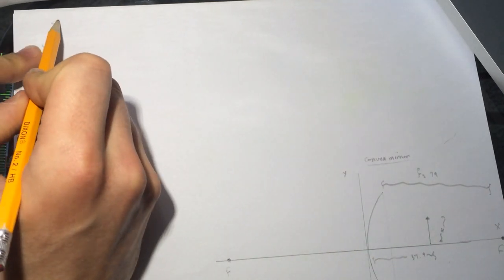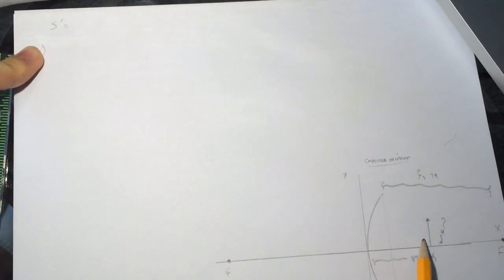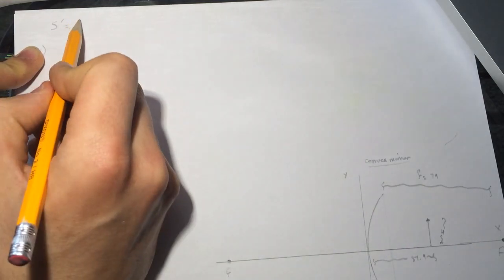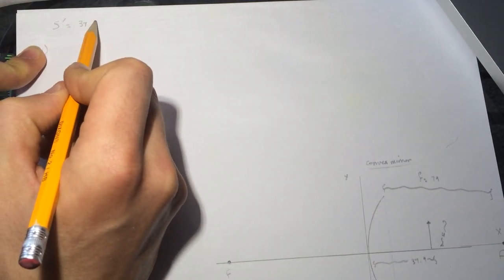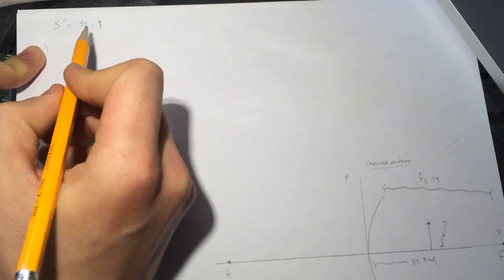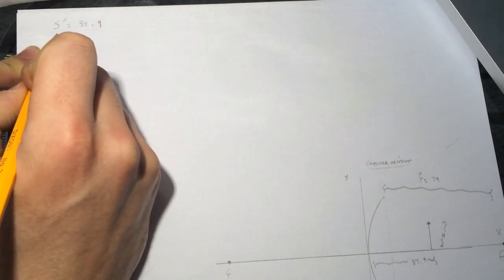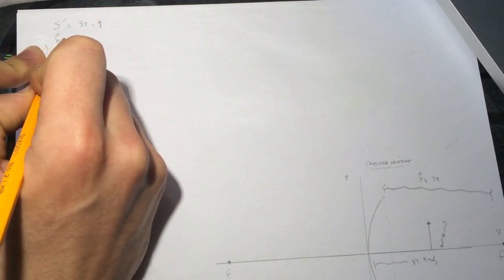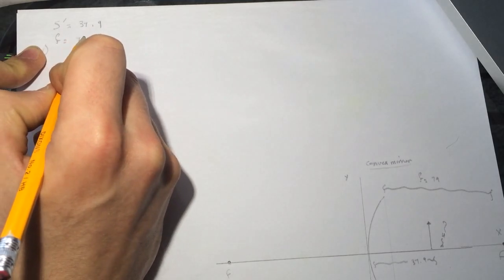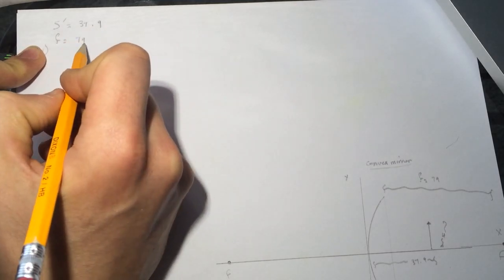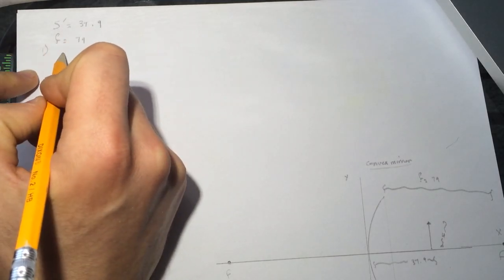So we have here the S prime, because this is the image, which is 37.9. And we got the focal point which is 79. So all of this is in a centimeter.